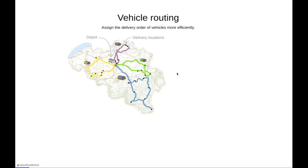For example, in this case we have a depot in the middle of a region and we need to visit a number of locations across the country. These dots here are locations that we want to visit. We have a number of vehicles — the purple, green, yellow, and blue vehicle — and we need to decide for each of these visits which vehicle visits those locations and in which order, and that's how we can actually reduce the driving time of these vehicles.